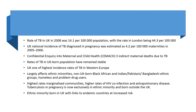TB largely affects ethnic minorities — non-UK-born Black African, Indian, Pakistani, and Bangladeshi ethnic groups — as well as homeless people and problem drug users. The highest rates are in marginalised communities, with higher rates of HIV co-infection and extrapulmonary disease. Tuberculosis in pregnancy is now predominantly in ethnic minorities and those born outside the UK. Ethnic minorities born in the UK with links to endemic countries are also at increased risk.